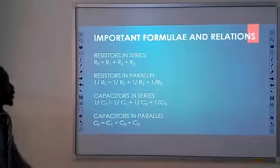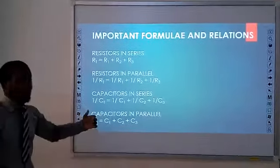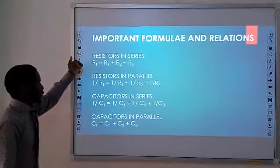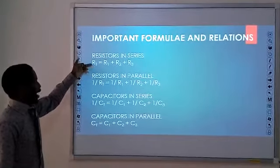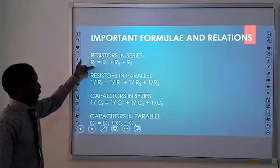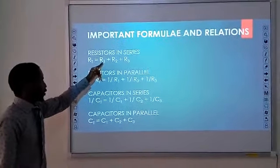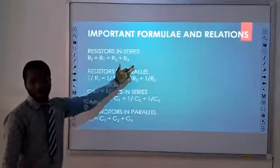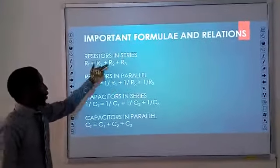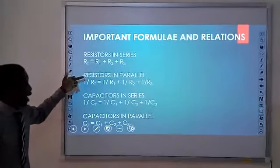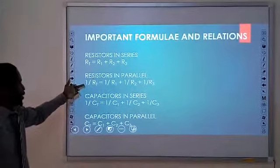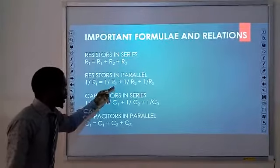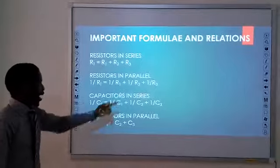These are important formulas and relations that we need. Resistors can be arranged in series or in parallel. In series, we add all the resistors together to get the total resistance. RT represents the total resistance: R1 plus R2 plus R3, and so on. When we have five resistors, we go from R1 to R5. When resistors are arranged in parallel, we apply the formula: 1 over RT equals 1 over R1 plus 1 over R2 plus 1 over R3.